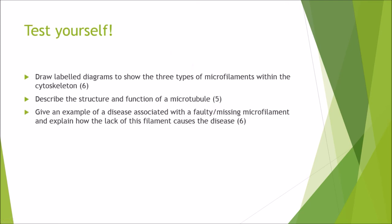That's the end of the content. Now for the test yourself section with some questions. For six marks: draw a labelled diagram to show the three types of microfilaments within the cytoskeleton. For five marks: describe the structure and function of a microtubule. And for six marks: give an example of a disease associated with a faulty or missing microfilament and explain how the lack of this filament causes the disease. I hope you enjoyed this presentation. Good luck revising.